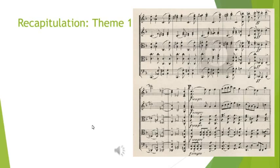An increase in rhythmic motion brings us to the recapitulation. The recapitulation begins with theme 1 slightly modified with triplet figures in the violas and the cello.